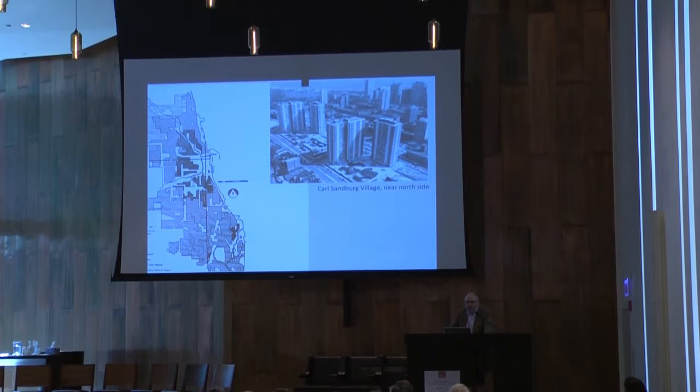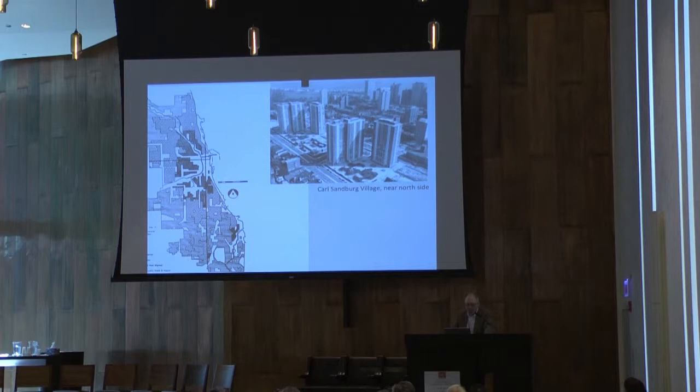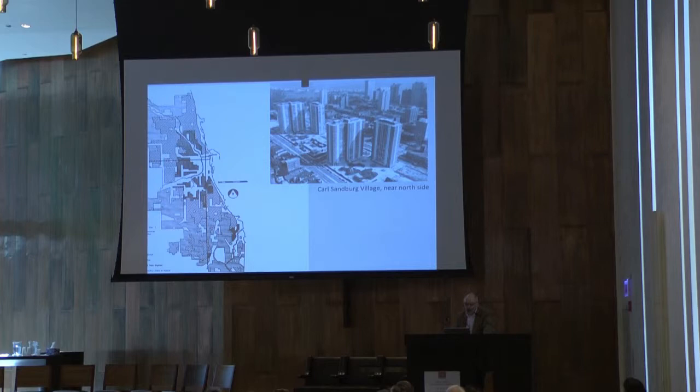So by the 1950s, most observers felt that the entire area around the loop was blighted, dilapidated, and needed to be completely removed and rebuilt, because the business interests of the central loop felt they were being strangled. This led to a massive program of clearance for new highways, new middle-class housing, and public housing. You're looking here at Carl Sandburg Village on the north side, which was a market project, not a public housing project, but the building stock is actually remarkably similar.